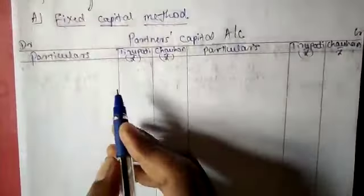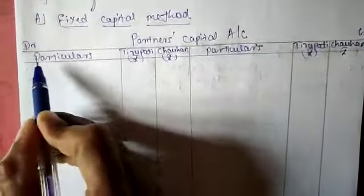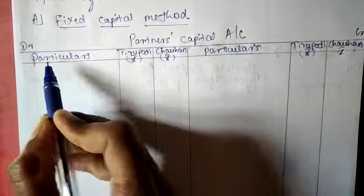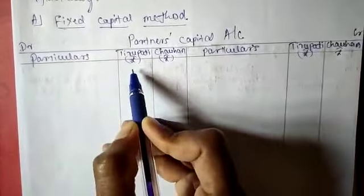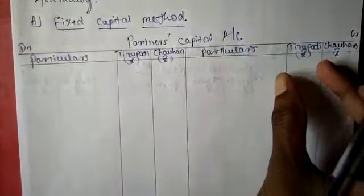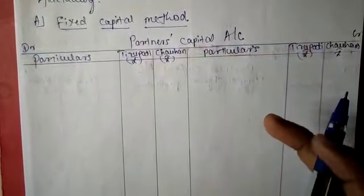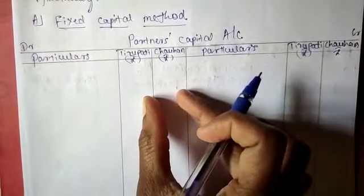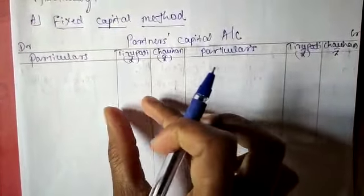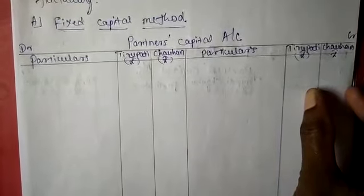Now draw the lines for the partner's capital account. The columns are: Particulars, Tirupati Rupees, Chauhan Rupees on both the debit and credit sides. These columns will record Tirupati's amounts and Chauhan's amounts respectively.